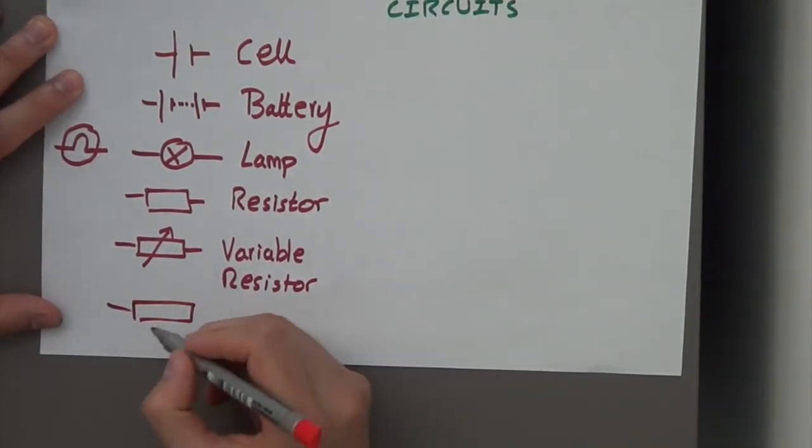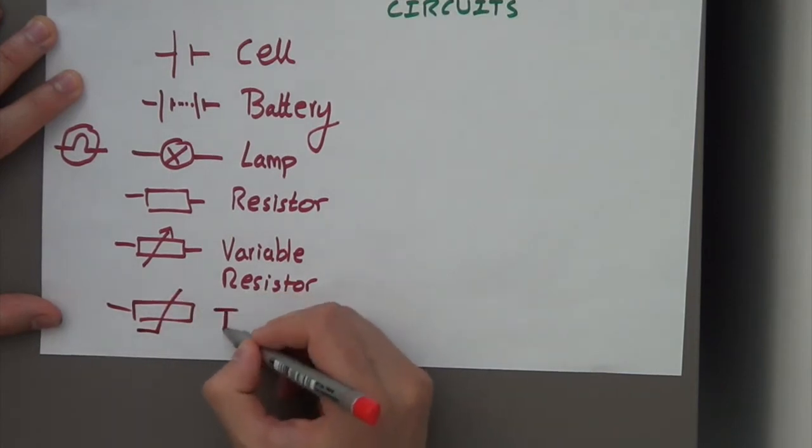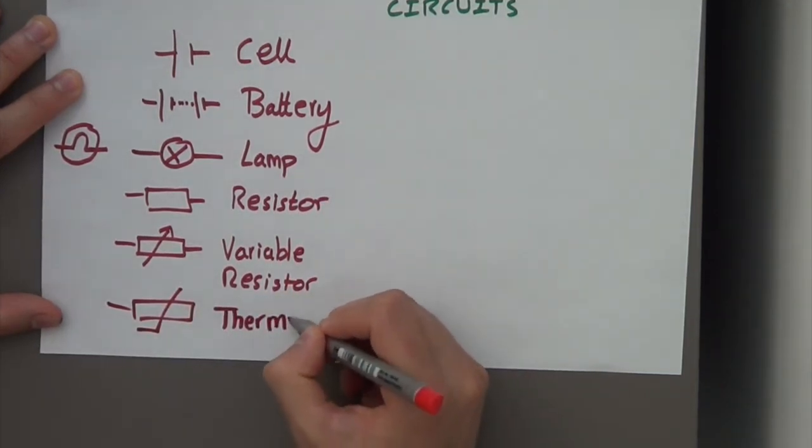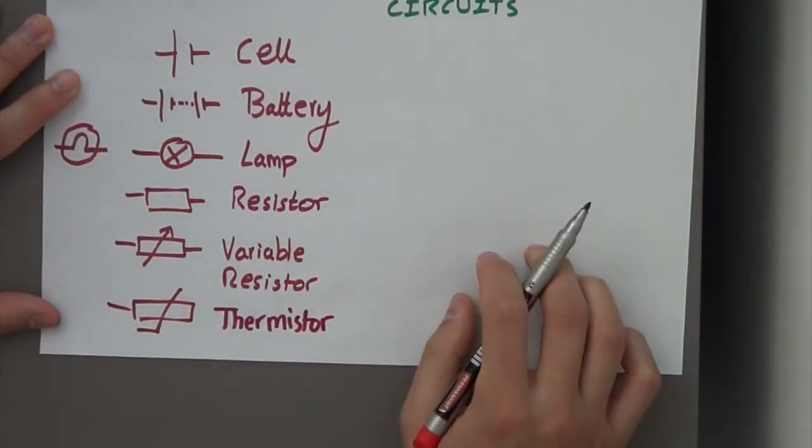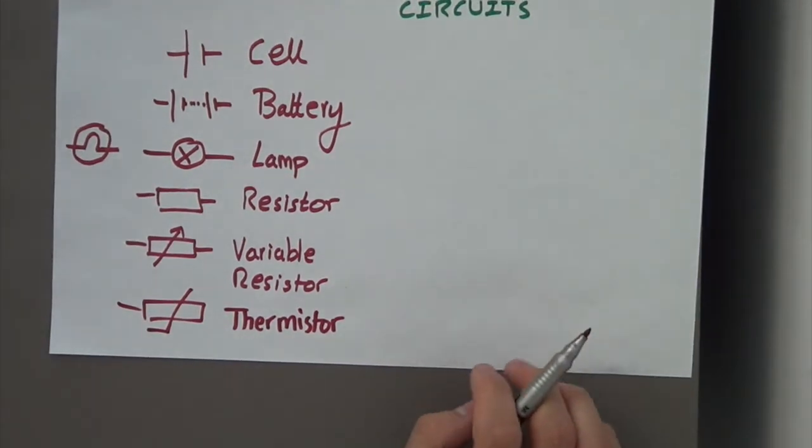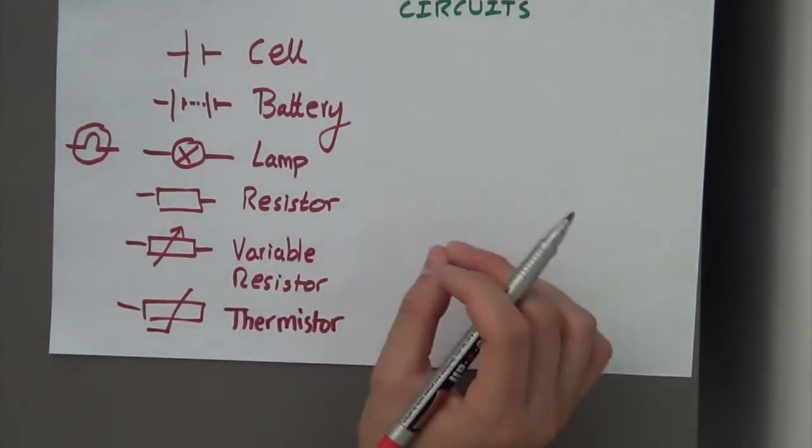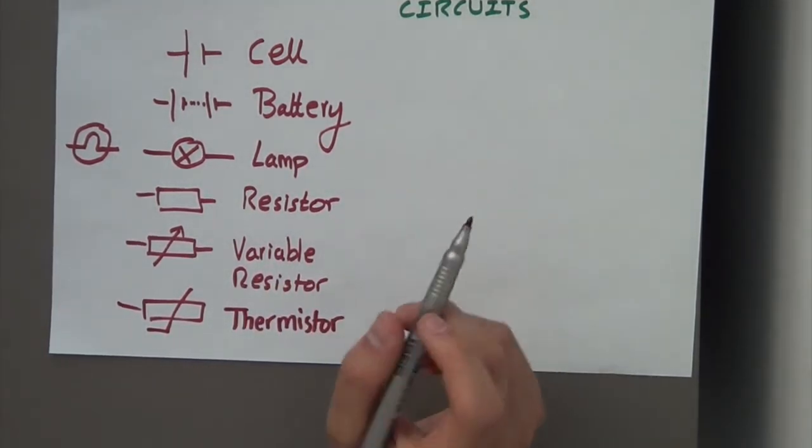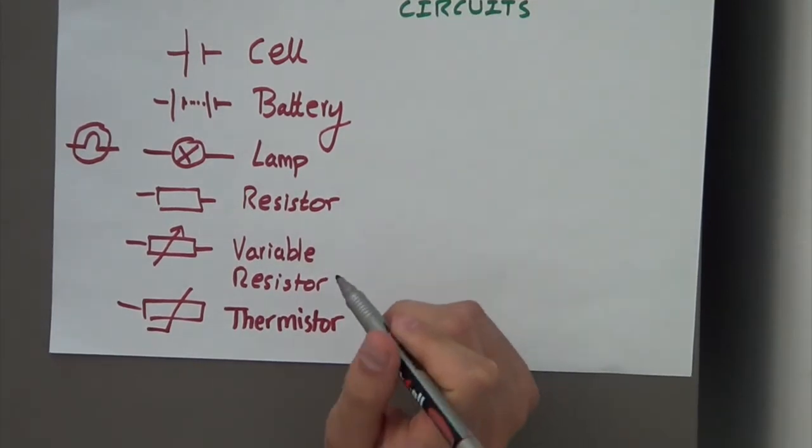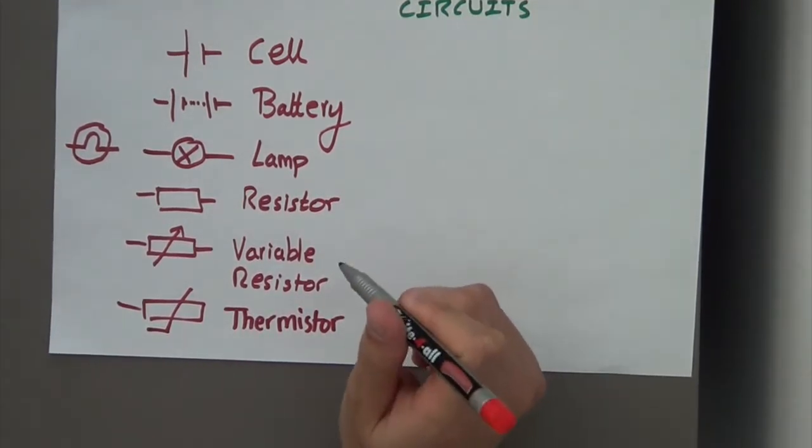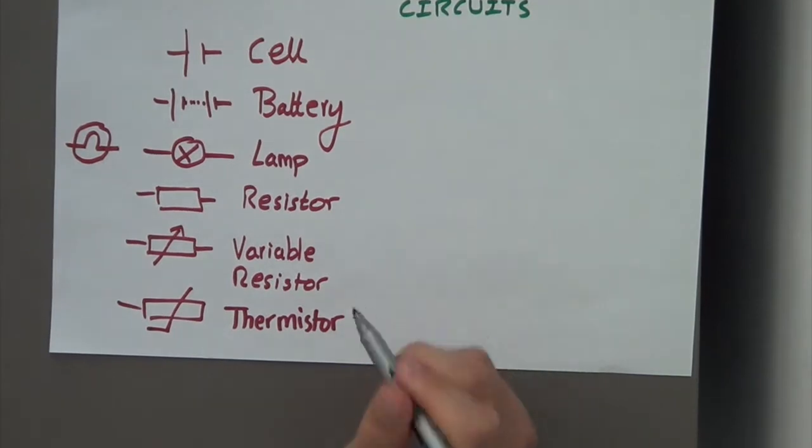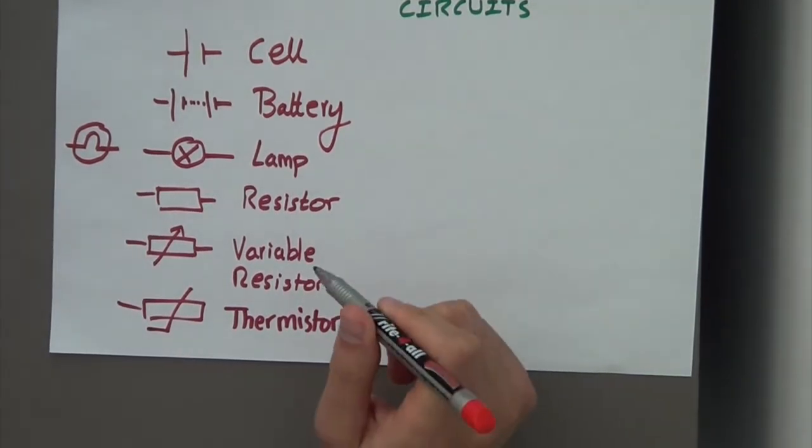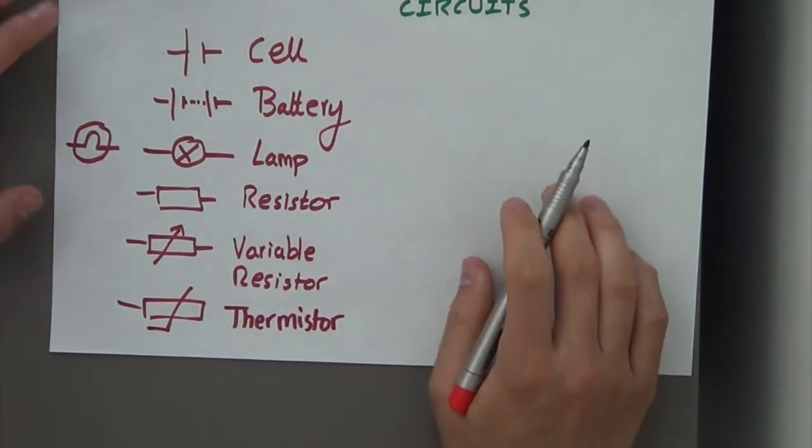This is a thermistor. Thermistors are unlike traditional metals where, when the temperature gets higher, the resistance actually increases due to the vibrations of the particles. But in the thermistor, the opposite happens. When you get a high temperature, the resistance decreases. In cold temperatures, it's got a high resistance, and in hot temperatures, it's got a low resistance.